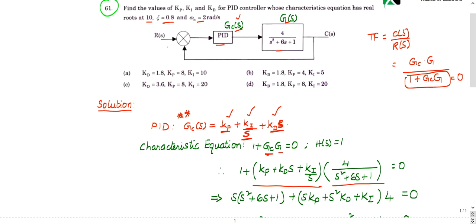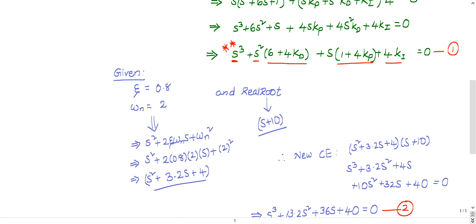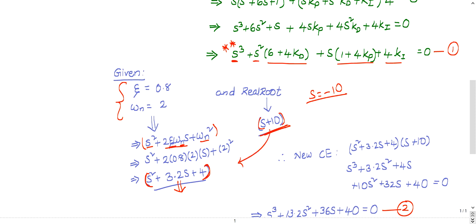One root is at -10. For the remaining two roots, we use the given zeta and omega_n. Since zeta and omega_n describe a second-order system, the standard second-order equation is s² + 2·zeta·omega_n·s + omega_n². Substituting zeta = 0.8 and omega_n = 2 gives the second-order factor. The real root at -10 means s = -10, so it contributes the factor (s + 10) to keep the system stable.